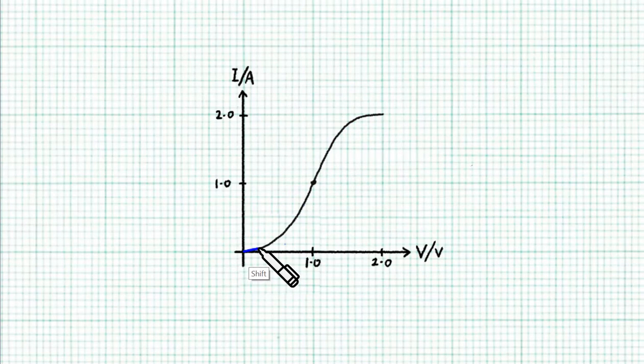So initially, the wiper is almost horizontal, right? So that's a very large V to I ratio. That's a very large resistance. As the voltage across the device increases, its resistance decreases. Can you see the wiper leaning more and more towards the current axis? So the resistance is decreasing.